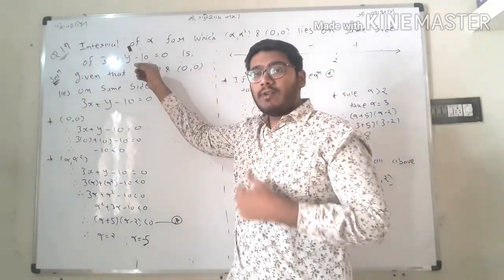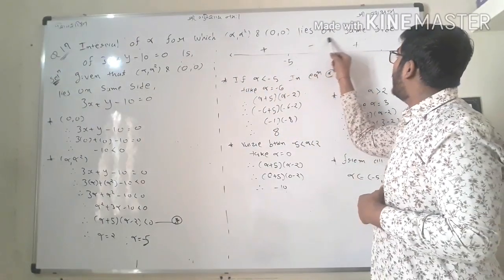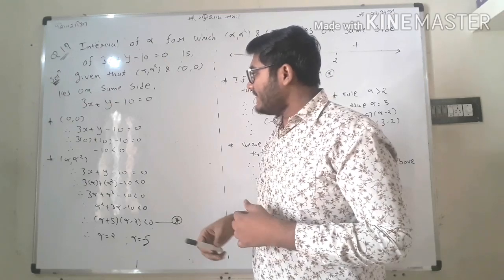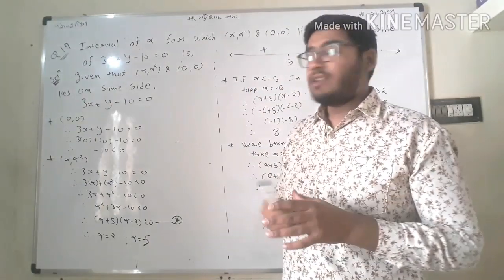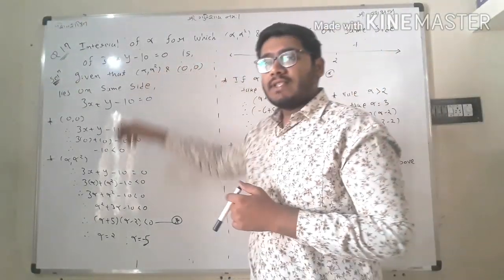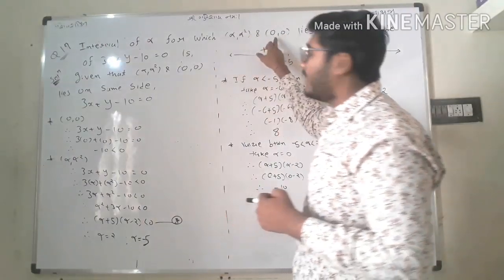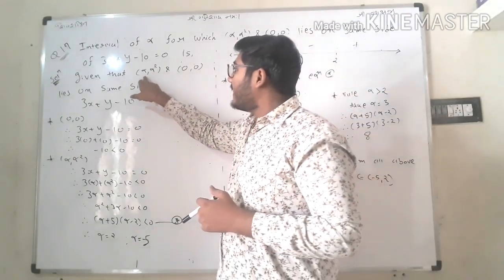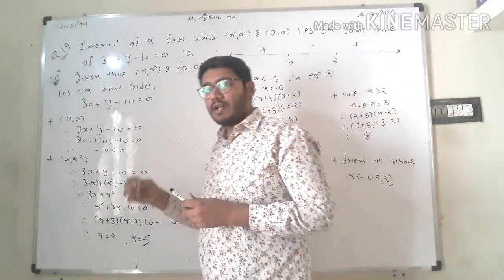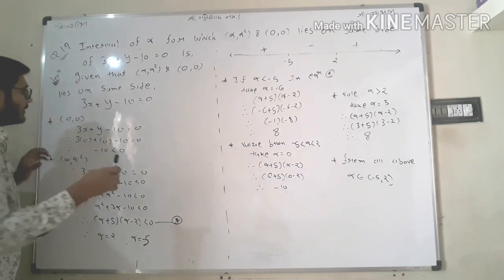The question is: find the interval of alpha for which the point (alpha, alpha squared) and (0, 0) lie on the same side of the line 3x + y minus 10 = 0. So the question asks that these two points lie on the same side of this line equation.